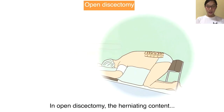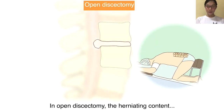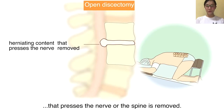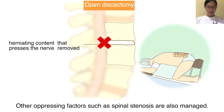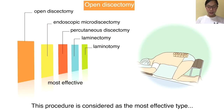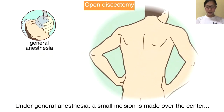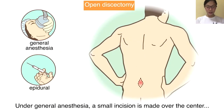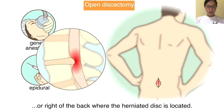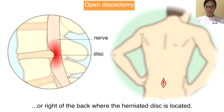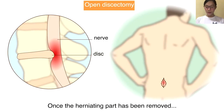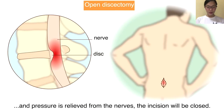In open discectomy, the herniating content that presses on the nerve or the spine is removed. Other compressive factors such as spinal stenosis are also managed. This procedure is considered the most effective type of surgery for herniated disc. Under general anesthesia, a small incision is made over the center or right of the back where the herniated disc is located. Once the herniated part is removed and pressure is relieved from the nerve, the incision is closed.